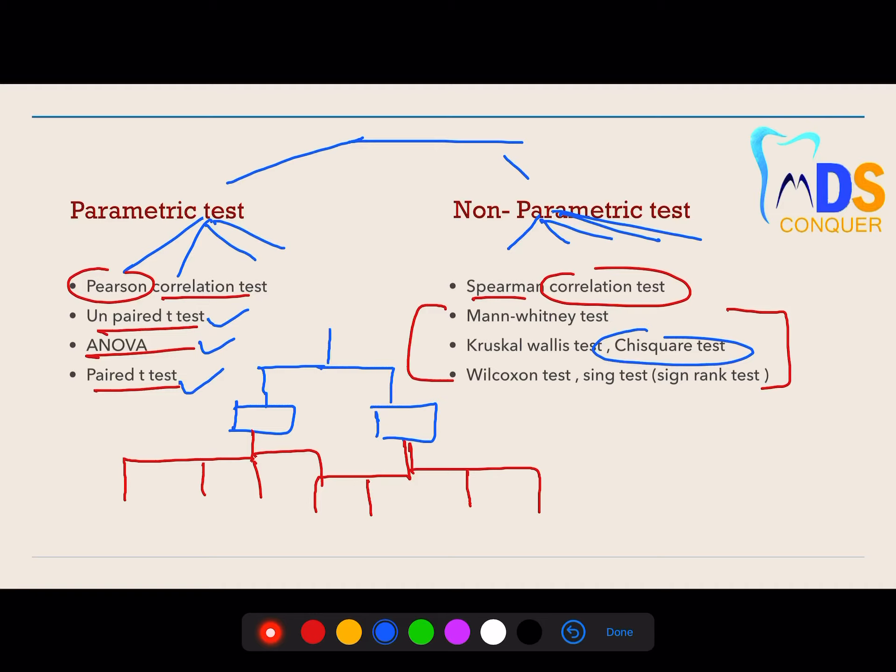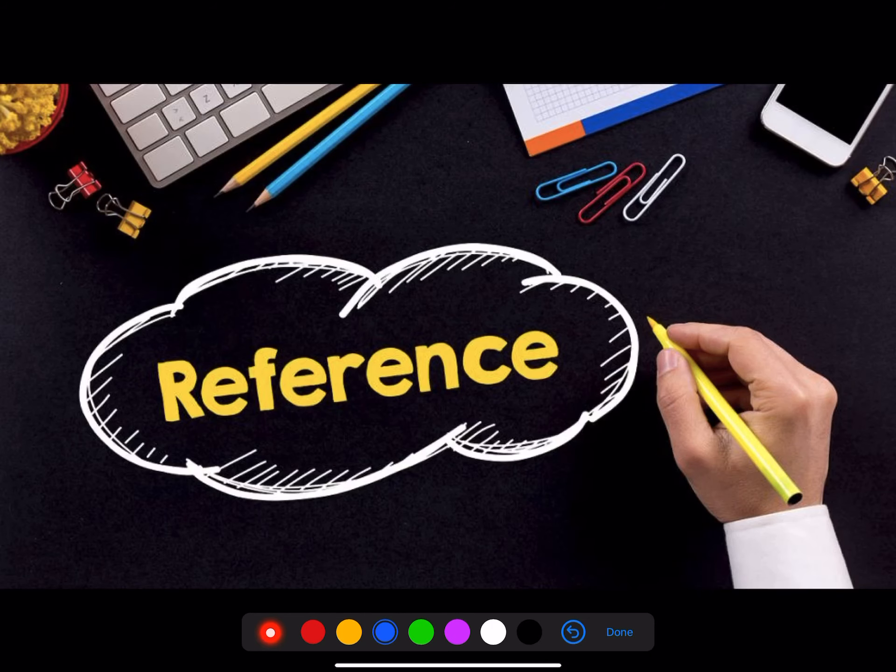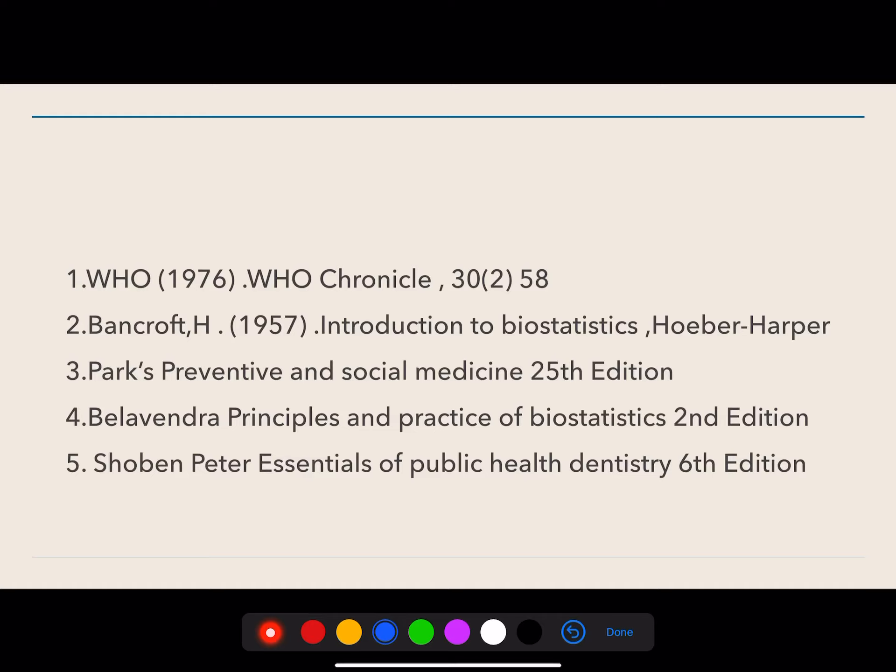References are very important. These are the common references you can code for almost all community-based questions. Whenever there is a community-based or statistical-related question, you can code these references. These five references are star references that you can follow and code everywhere.